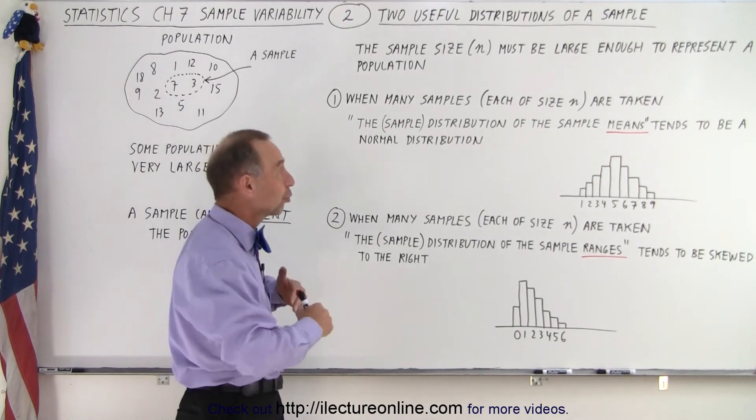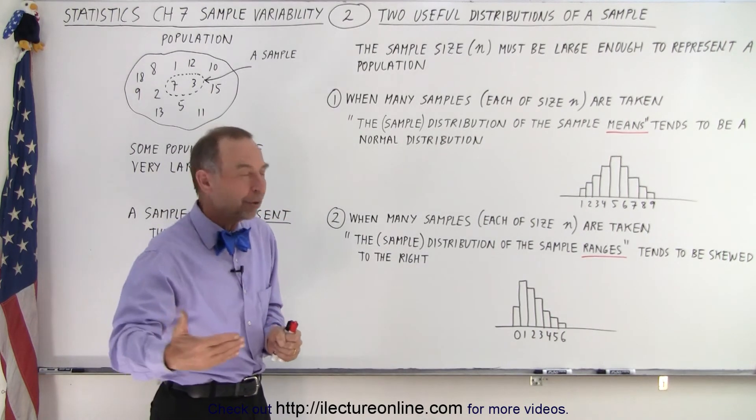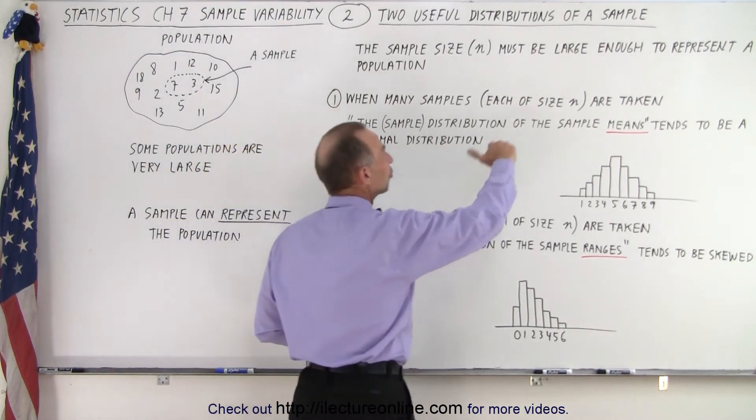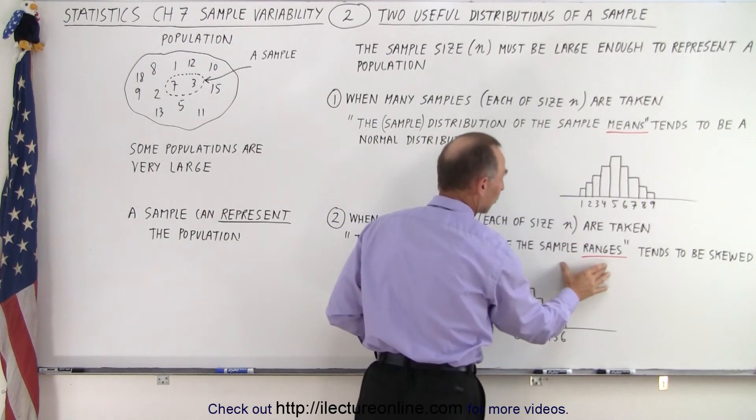But at least that gives you a good introduction as to why we take samples, why we take multiple samples, and then we draw distributions of those multiple samples. The two distributions will be the sample means and the sample ranges.